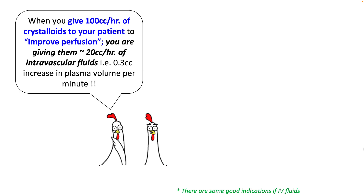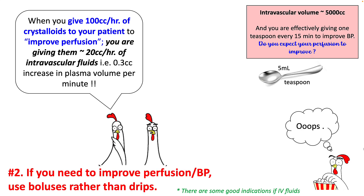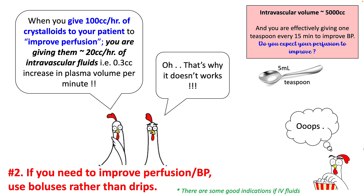Since only one-fifth of your fluid remains intravascular to improve cardiac output, when you give somebody 100 cc per hour of crystalloid to improve perfusion or blood pressure, you are actually giving only around 20 cc per hour of intravascular fluid — because 80 cc is seeping out. Since your intravascular volume is around 5000 cc, you are effectively giving around 5 cc of intravascular augmentation every 15 minutes. That's around one teaspoon, so you can see why this will not really help improve perfusion or blood pressures.